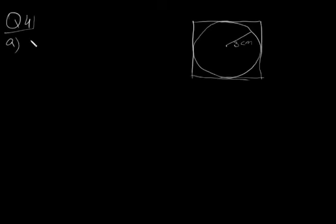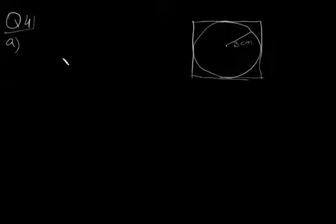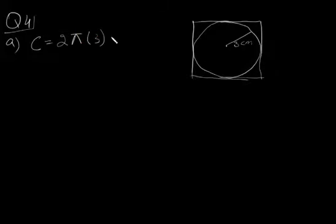In the question there is a diagram showing a square with a circle inside it. You can see the question clearly in your book. In part A, you need to find out whether the answer is rational or irrational. You need to find the circumference of the circle. The formula is 2πr, and r is 3, so you have 6π.